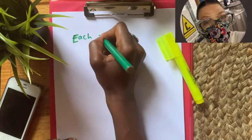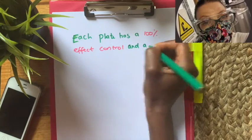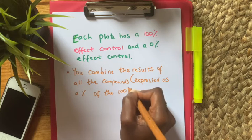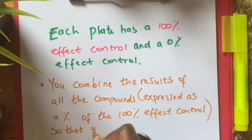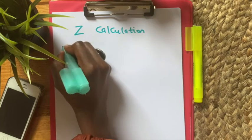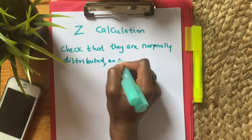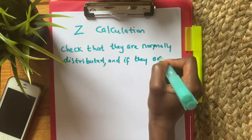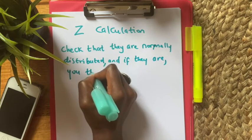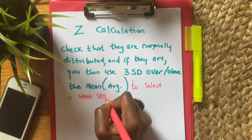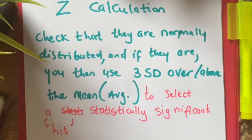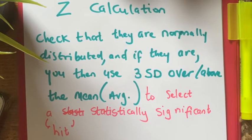To calculate the Z-factor, each plate needs a 100% effect control and a zero percent effect control. You express all compound results as a percentage of those controls to compare them. You must check the data is normally distributed by plotting a histogram; the calculation only applies to normally distributed data. If normally distributed, you use three standard deviations above the mean to select a statistically significant hit — a compound giving a signal three standard deviations above average indicates a genuine interaction.